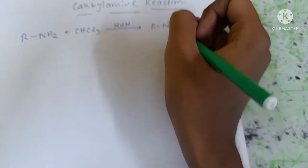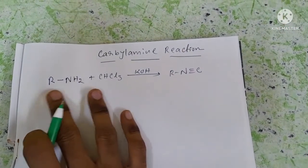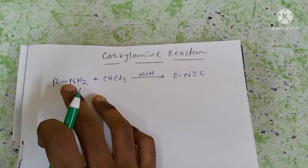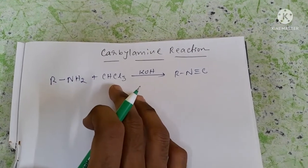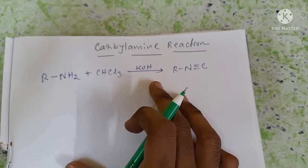This reaction is mainly done in alkaline medium. Here the main reagent is primary amine, which is the substrate. In the presence of chloroform, NaOH or KOH is used as a base.